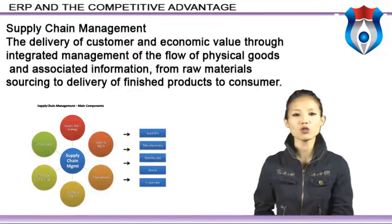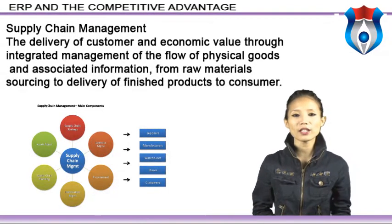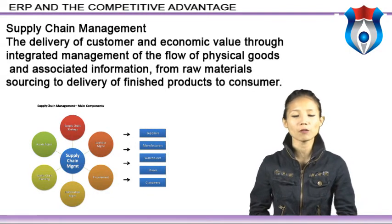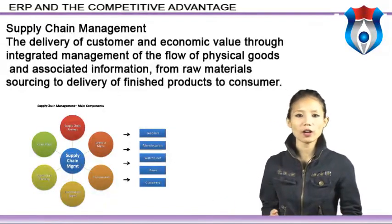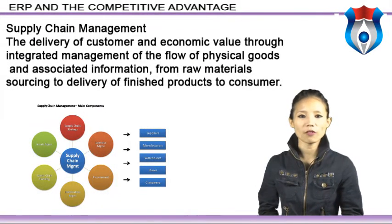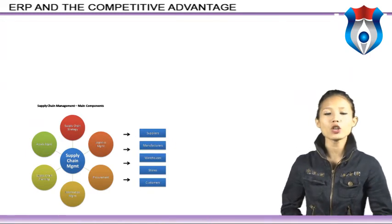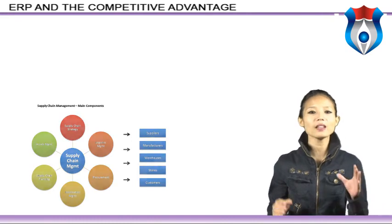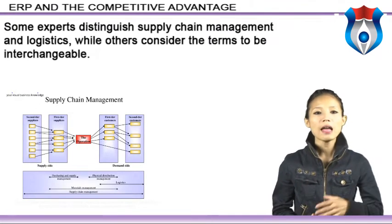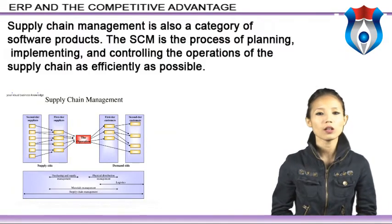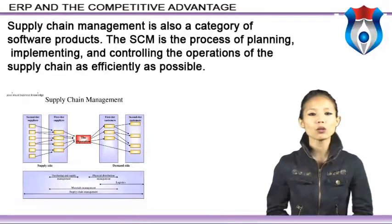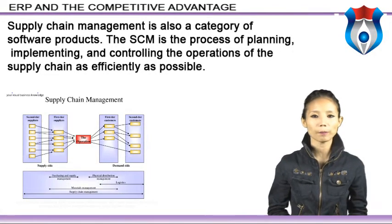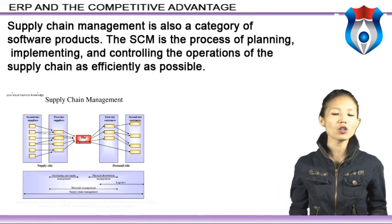Supply chain management encompasses the planning and management of all activities involved in sourcing, procurement, conversion, and logistics management activities. Importantly, it also includes coordination and collaboration with channel partners, which can be suppliers, intermediaries, third-party service providers, and customers. In essence, supply chain management integrates supply and demand management within and across companies. The SDM is a process of planning, implementing, and controlling the operation of the supply chain as efficiently as possible. Supply chain management spans all movement and storage of raw materials, work in process, inventory, and finished goods from point of origin to point of consumption.